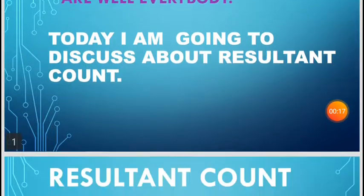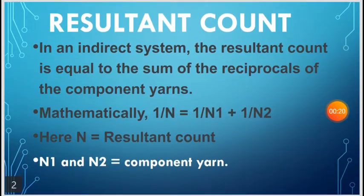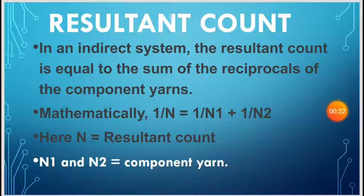In an indirect system, the resultant count is equal to the sum of the reciprocals of the component yarns. Mathematically, 1/N = 1/N1 + 1/N2, where N = resultant count, and N1 and N2 = component yarn or individual yarn.